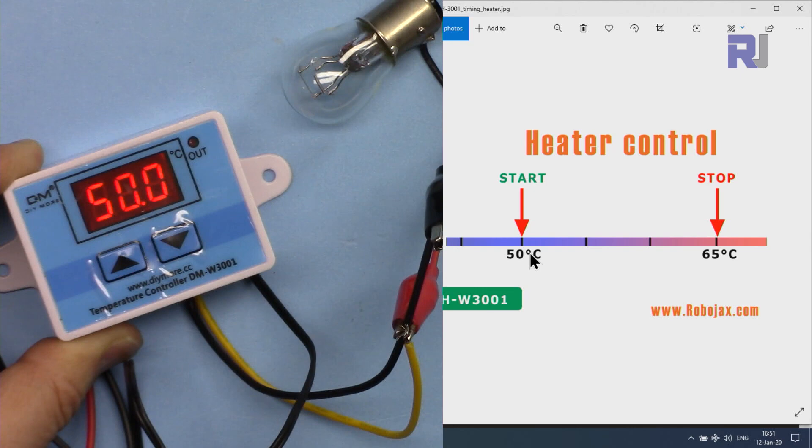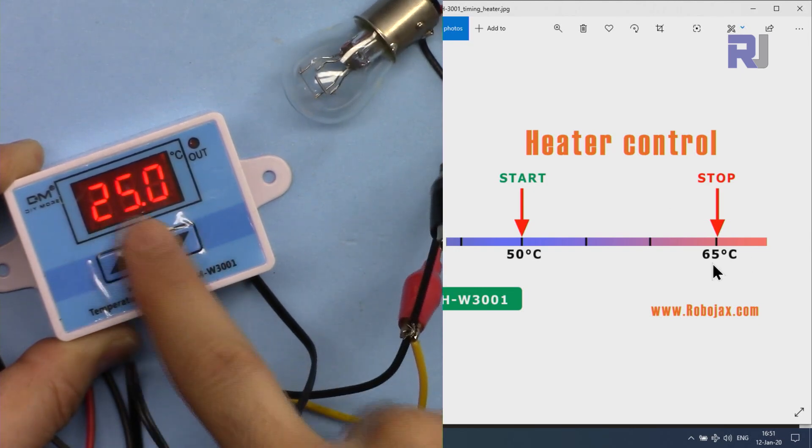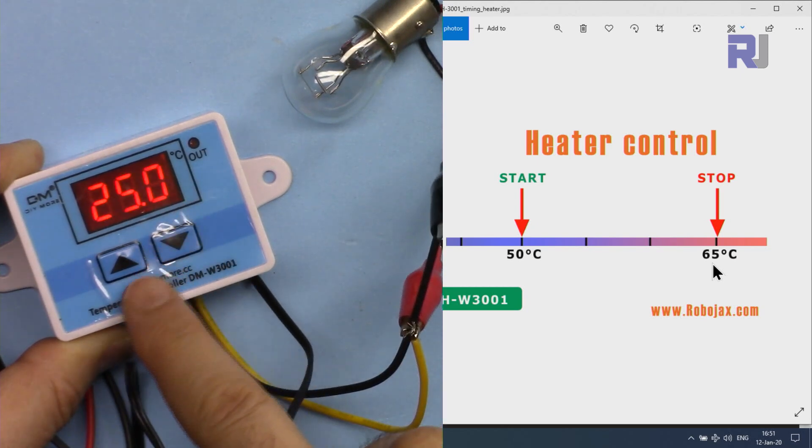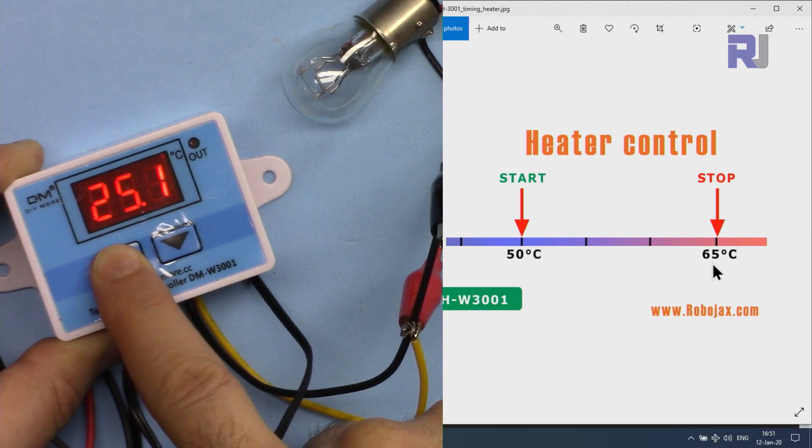The start is now set to 50. Now I'm going to set the stop by pressing this button and then holding it again. It will start blinking and then I can increase it to 65.